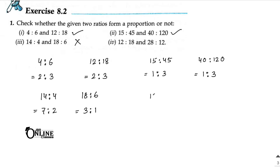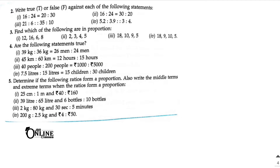Last one: 12 is to 18 — divide by 6, it's 2 is to 3. Here 28 is to 12 — divide by 4, it's 7 is to 3. Not equal, so not in proportion.